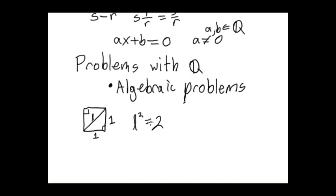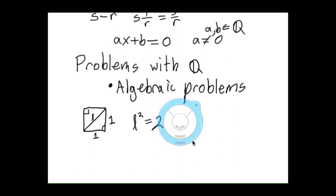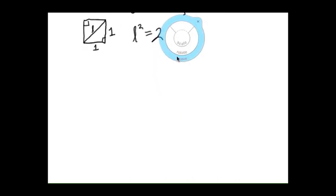In fact there's a very classic proof that no such rational L exists. And I'll show this here. It's a pretty basic proof, a classic proof by contradiction. So what we do is we assume that such a rational L exists. So we assume L is rational.